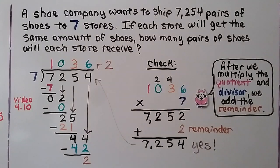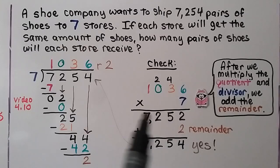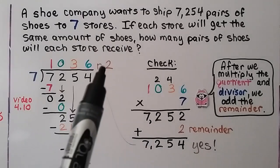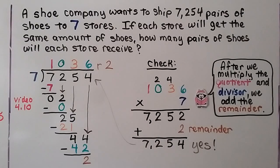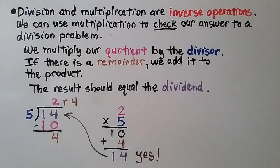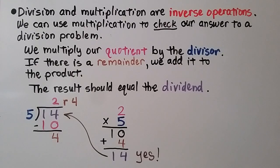After we multiply the quotient and divisor, we need to add any remainder. Then we'll get our full product and it should match the dividend. If you're checking your division with multiplication and you don't get the same number as the dividend, check to see if there was a remainder you were supposed to add — maybe you just forgot to add it.